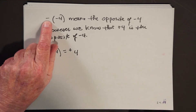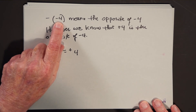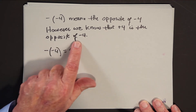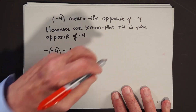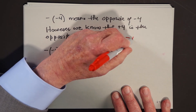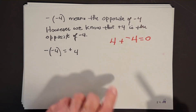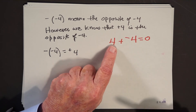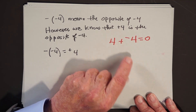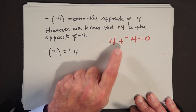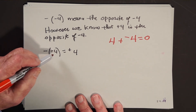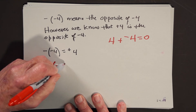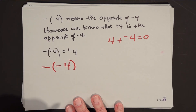We're going to read this as the opposite of negative four. We know that four is the opposite of negative four. We already know that four plus negative four equals zero. What do you have to add to four to get zero? Negative four. What do you have to add to negative four to get zero? Positive four. So the opposite of negative four is positive four. And I hope you can begin to see why I don't like to write these as minus minus four.